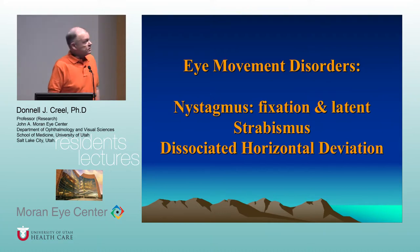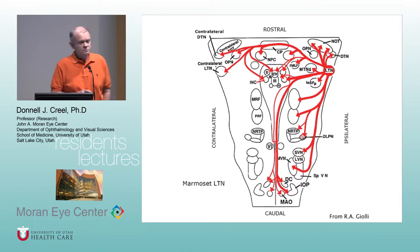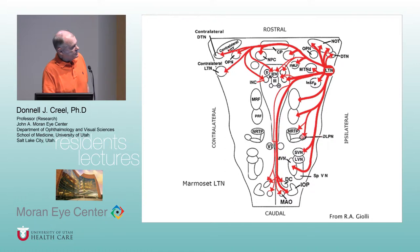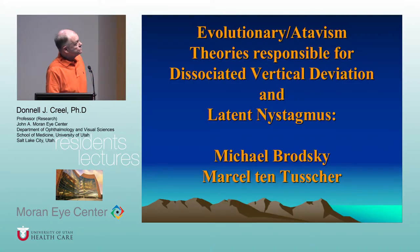Albinism is a model for a lot of disorders, including nystagmus fixation. The brainstem connections that control eye movement are very complicated — if you ever want a cure for insomnia, look up Roland Gioli. He was the world's expert on brainstem connections controlling eye movement, and to this day they don't know why albinos develop nystagmus.